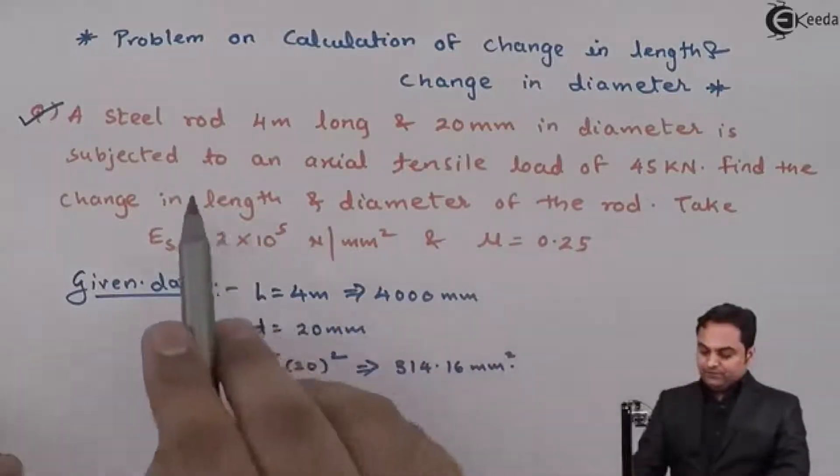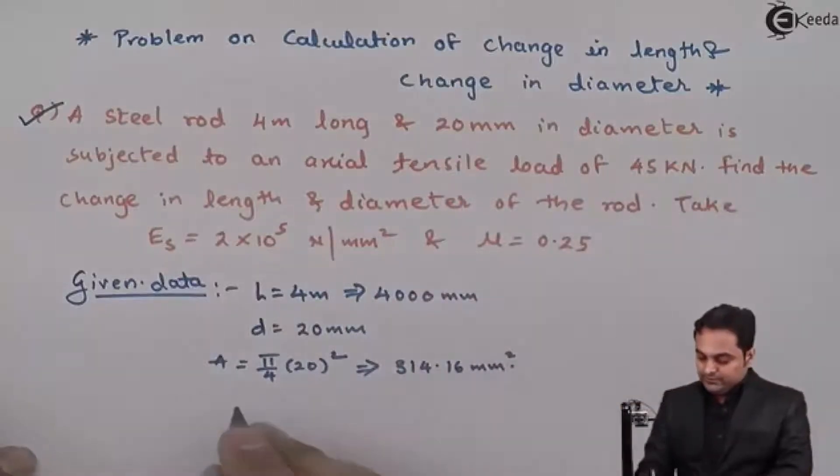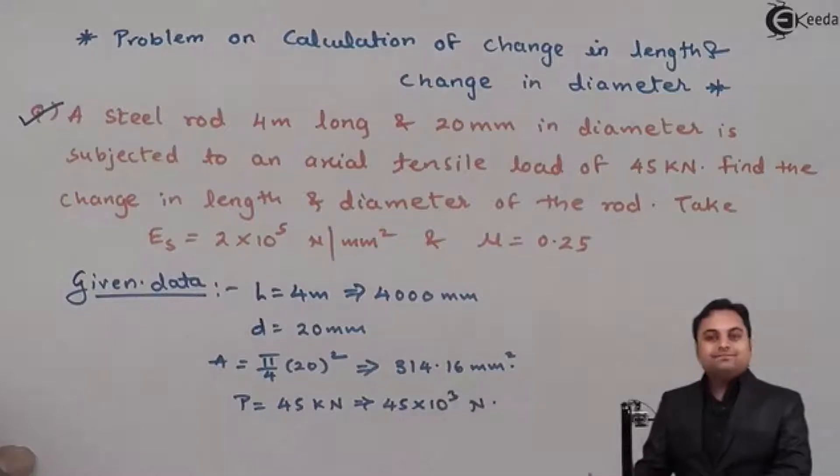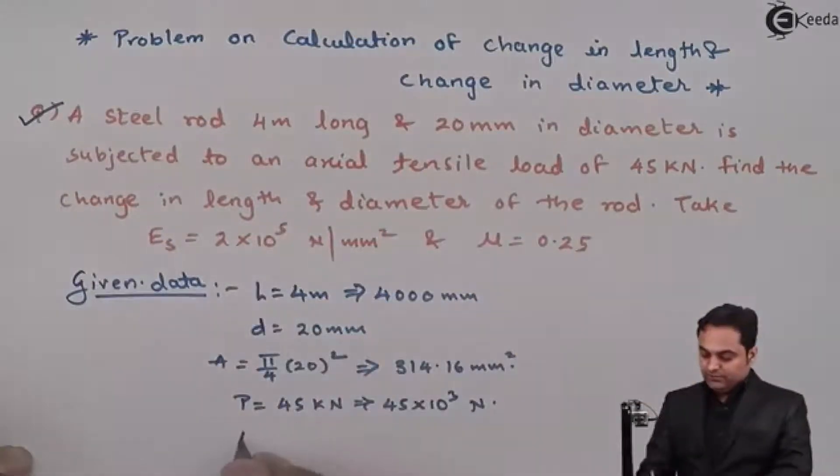Next, is subjected to an axial tensile load of 45 kN. Tensile load is P, that is 45 kN, so it is 45 × 10³ N. Next, find the change in length and change in diameter of the rod. So change in length is ΔL and change in diameter.